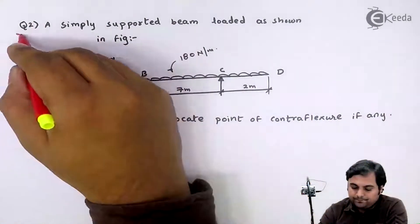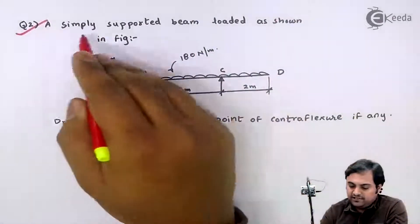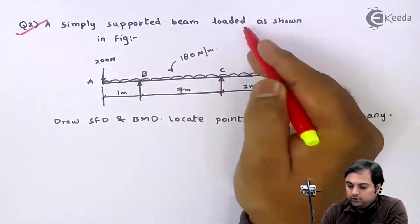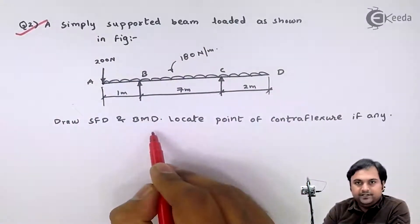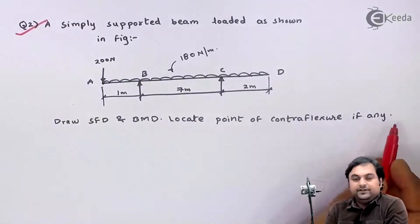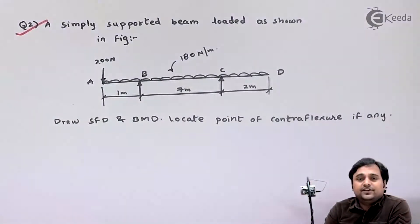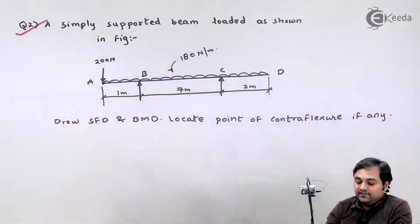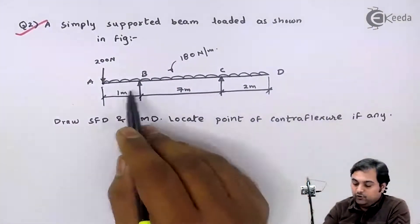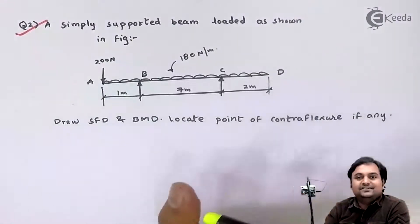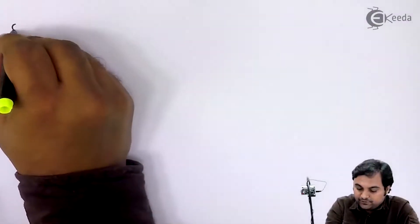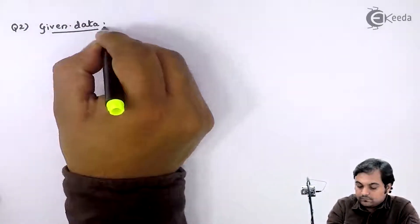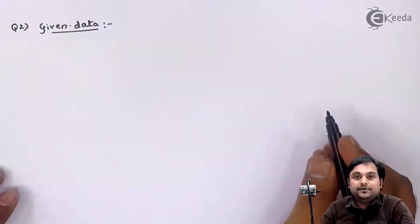Let's take question number two. Here we have a simply supported beam loaded as shown in the figure. The diagram is given. Draw SFD and BMD, and locate the point of contraflexure if any. This is the question we have in front of us. As given, we can see an overhanging beam here. I will write the data first, which is in the form of a diagram. Let us start with question number two — in the data part I will draw the beam once again.